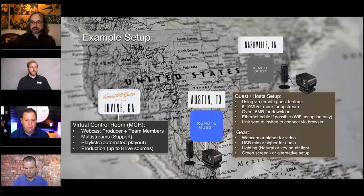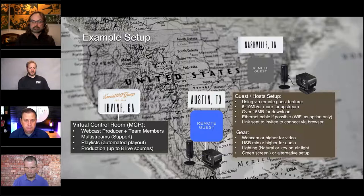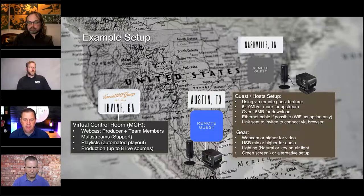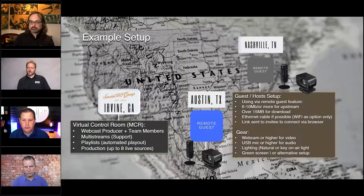As Corey mentioned, it is important for the talent or the guest to have a decent internet connection. With EasyLive.io, you can pull them over the remote guest feature using the WebRTC protocol, but you want to make sure they have a decent ethernet configuration — I prefer a cable and use Wi-Fi as an option. A link is sent to the invitee, so they don't have to install an app. You can send an invite and they can join via that link and you can pull them into the production.